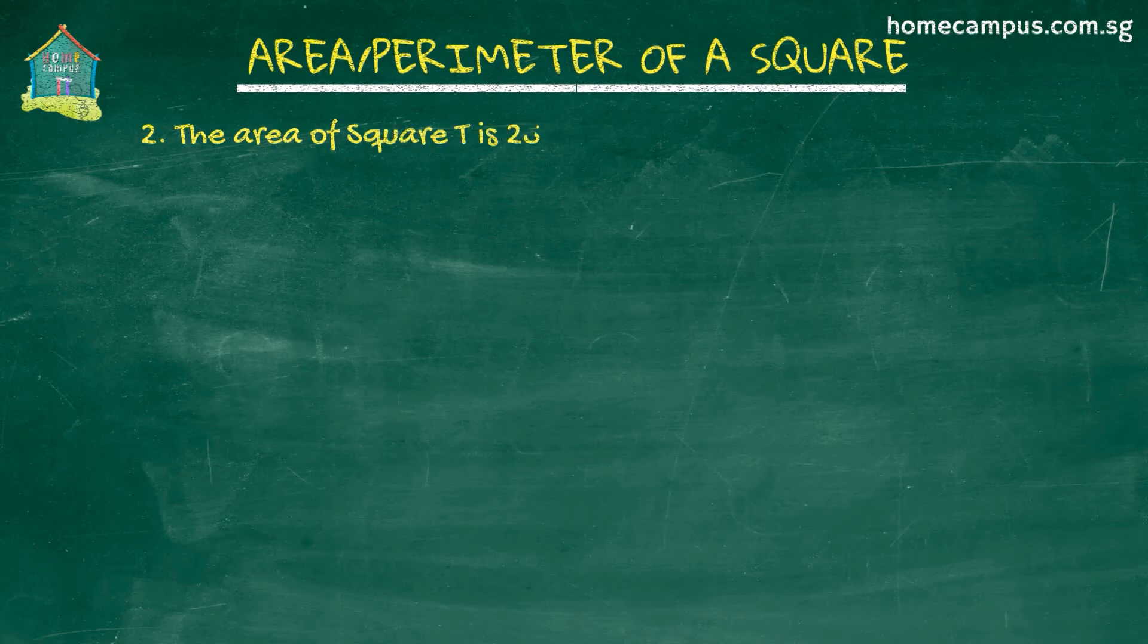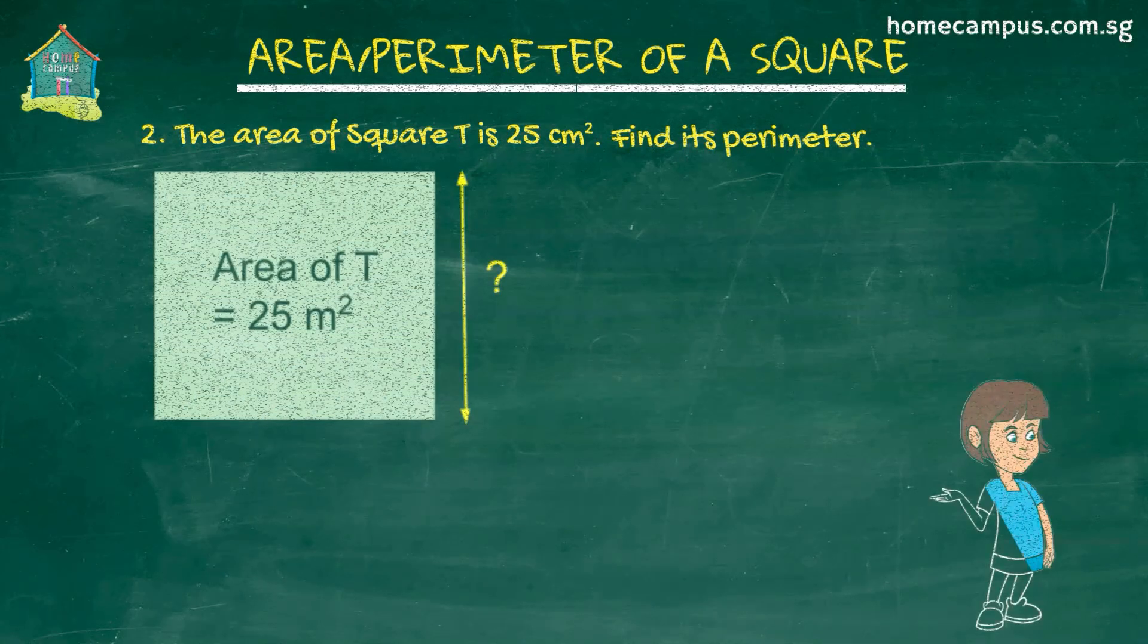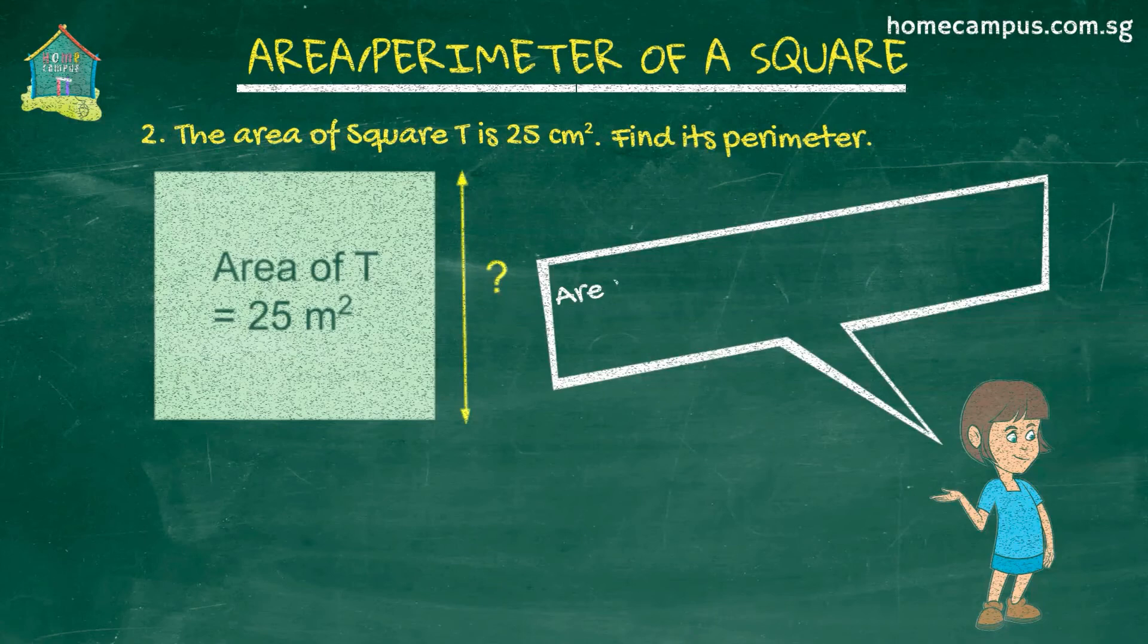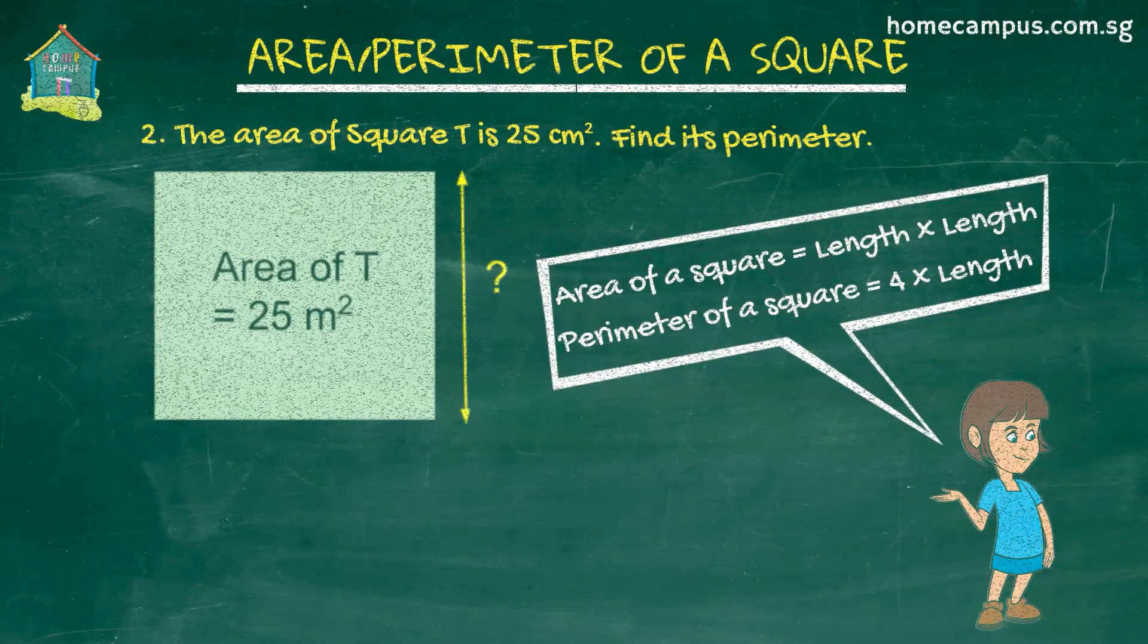The area of square T is 25 centimeters square. Find its perimeter. Perimeter of square T is 4 times its length. We don't know the length of the square yet but we can find that out using its area which is 25 centimeters square.